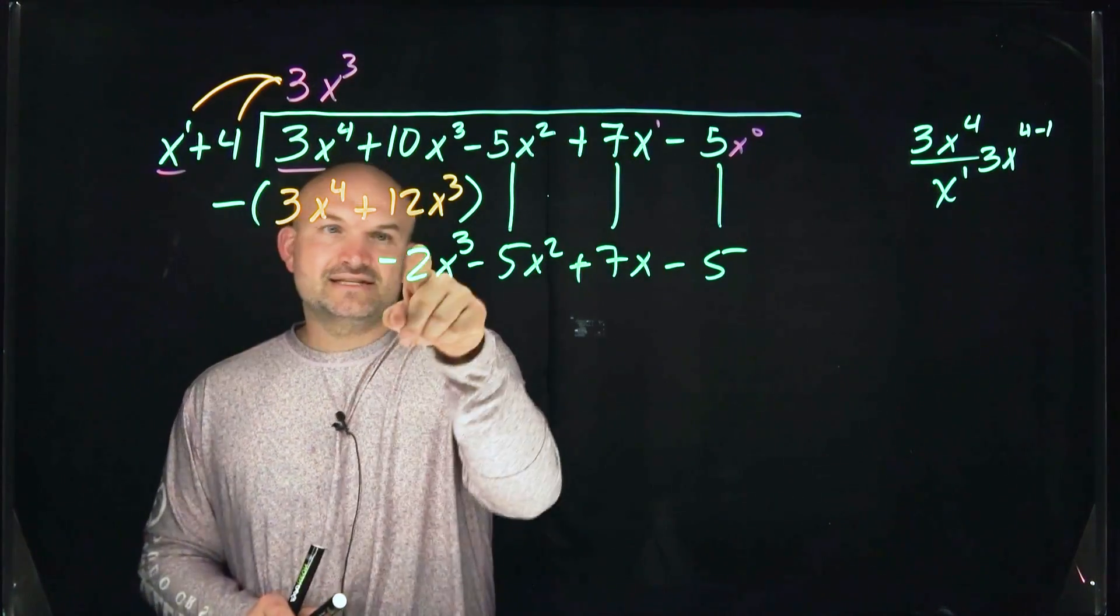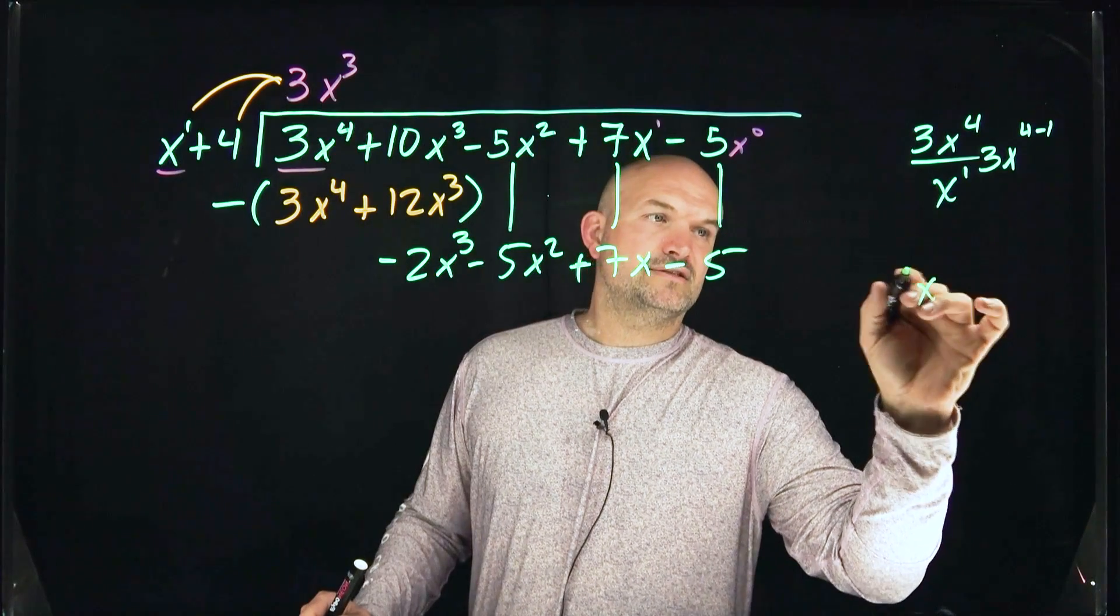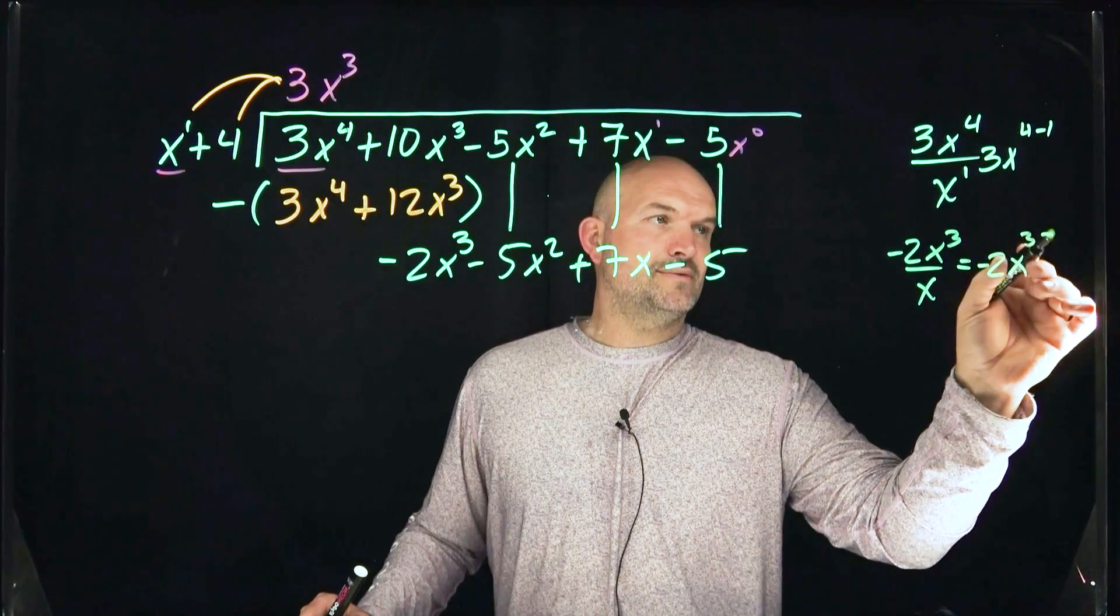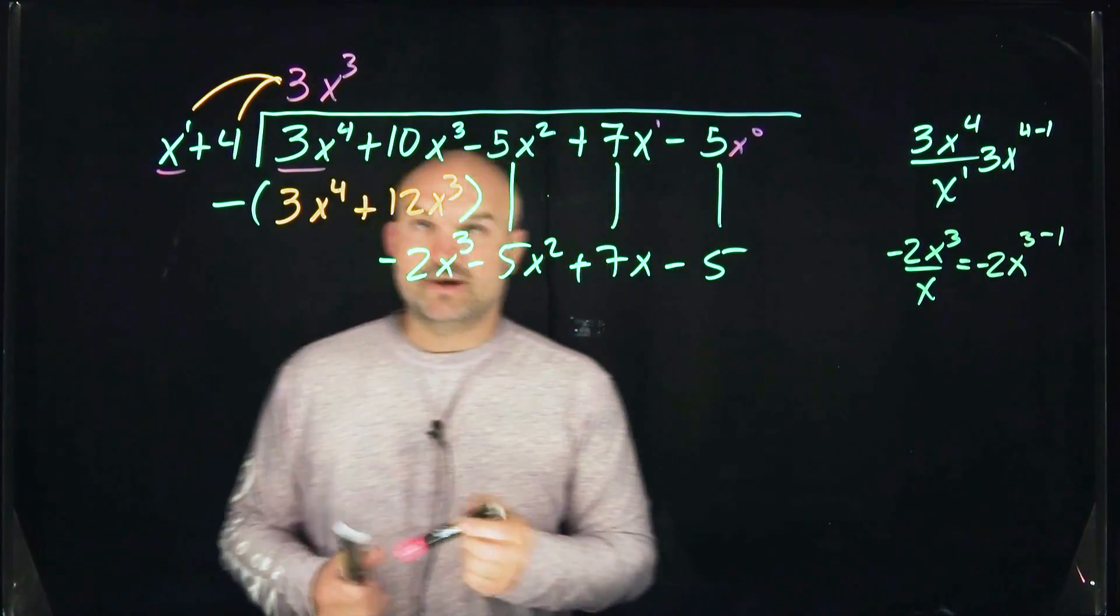How many times does x divide into negative 2x cubed? So that's going to be negative 2x to the 3 minus 1, which is just going to leave me with negative 2x squared.